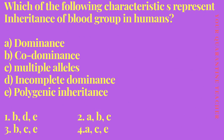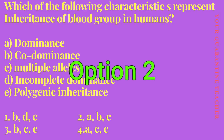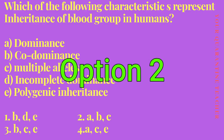Next question: which of the following characteristics represent inheritance of blood group in humans? Option A: dominance, Option B: co-dominance, Option C: multiple alleles, Option D: incomplete dominance, Option E: polygenic inheritance. Blood groups show dominance and co-dominance, and there are three alleles, so the answer is Options A, B, and C.